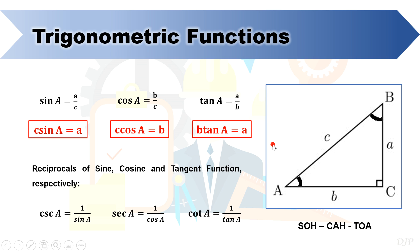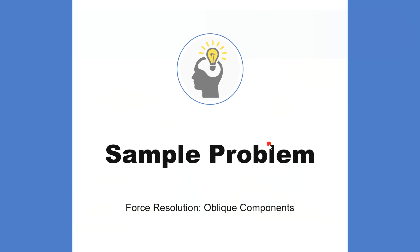Also recall that cosecant, secant, and cotangent are functions that are reciprocal of sine, cosine, and tangent functions, respectively. Now let's solve a sample problem about oblique components.